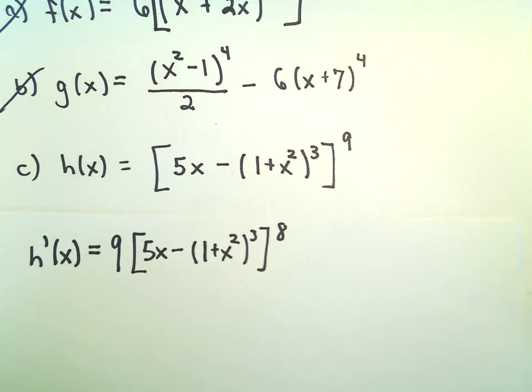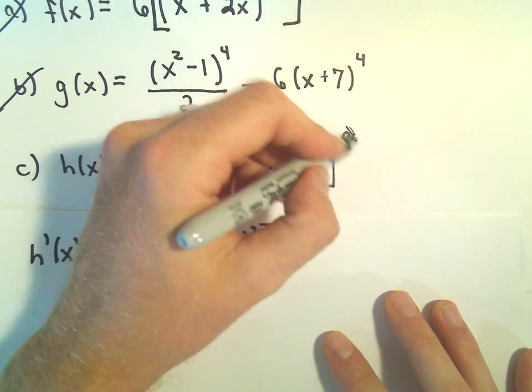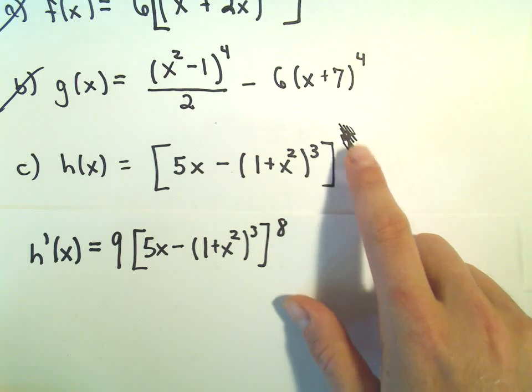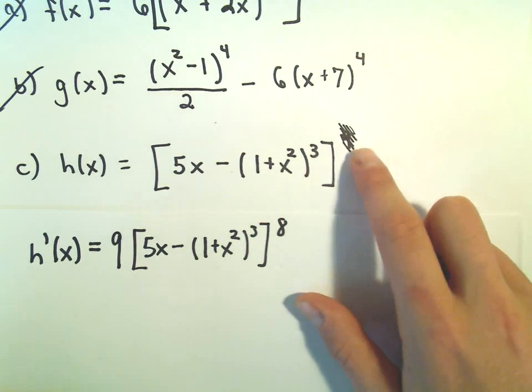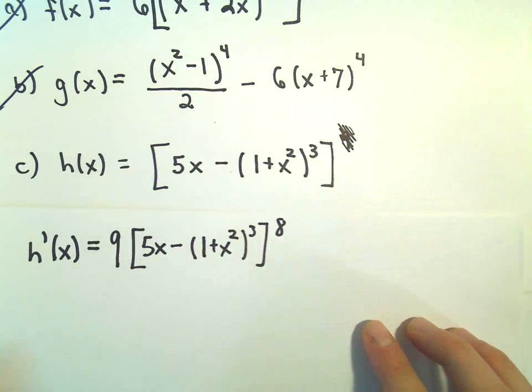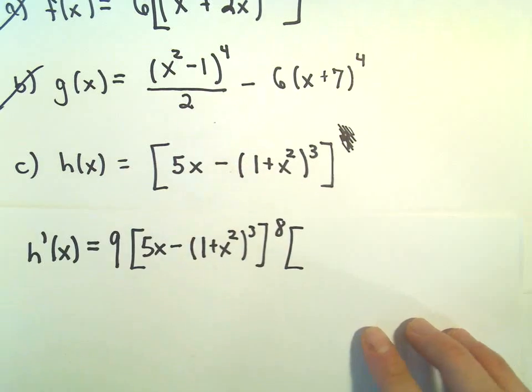Now, the way I think about it is, in my head, I kind of get rid of that part. I've taken the derivative of the part including the exponent of 9. That's why I got this. So now I move a little bit more inside.